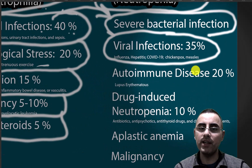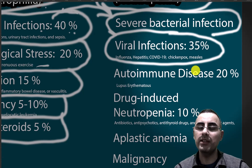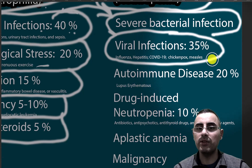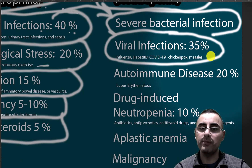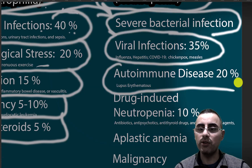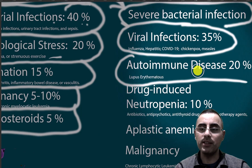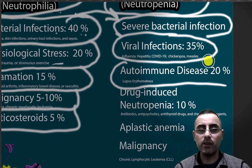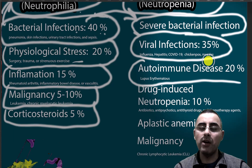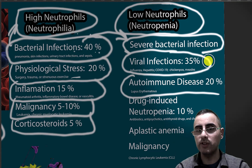The most common causes are viral infections like influenza, hepatitis, COVID-19, chickenpox, measles, and many other viruses — almost any viral infection can cause low neutrophil count. Autoimmune diseases such as systemic lupus erythematosus can cause low neutrophils, and sometimes rheumatoid arthritis as well.